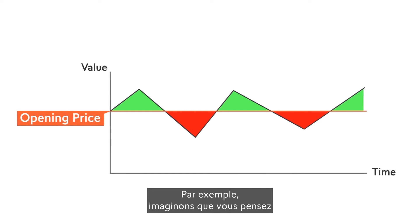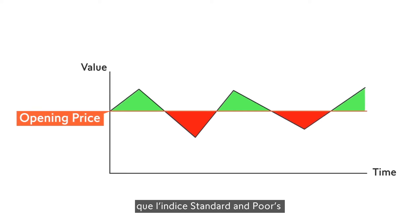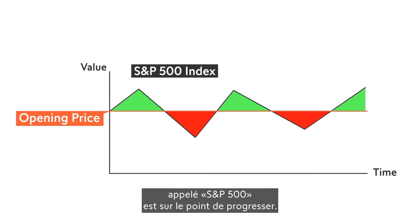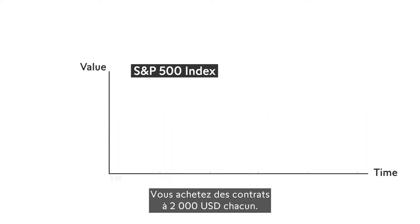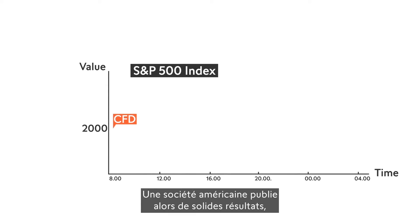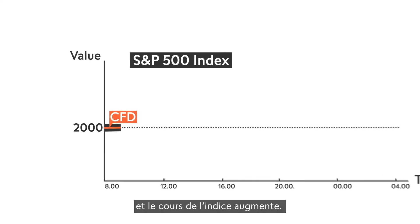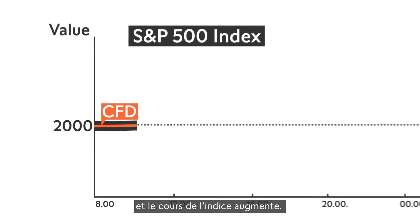For example, imagine that you believe that the Standard and Poor's stock index, called the S&P 500, will soon rise, so you purchase contracts at US$2,000 each. An American company then publishes strong results and the price of the index rises.